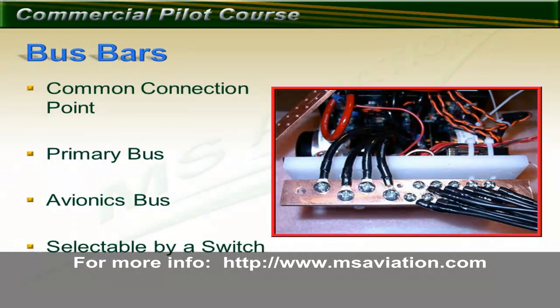Within the aircraft's electrical system, there will be one or more bus bars. A bus bar is a solid metal piece that allows connections from many places. Connecting all of those wires to a common metal bar is the solution to a connection area with many wires coming together — it would otherwise be impossible and dangerous.